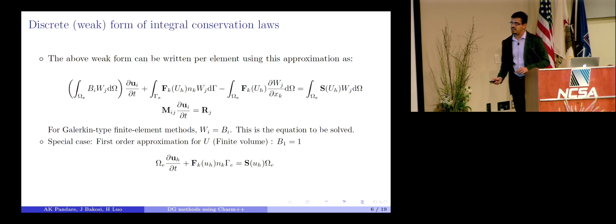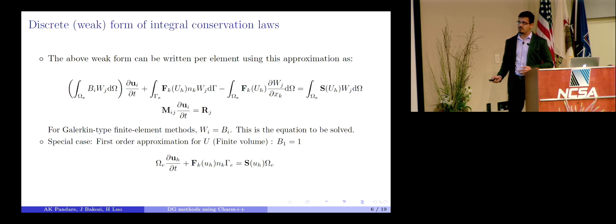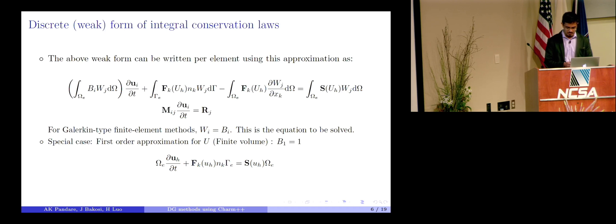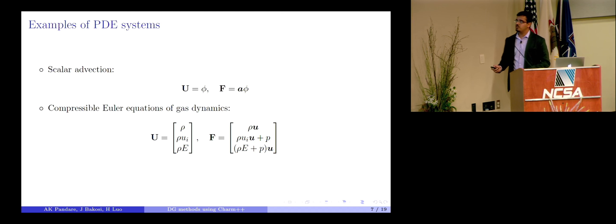So for Galerkin type of finite element methods, the test function that I was talking about is equal to the basis function. And that's the speciality of the Galerkin type finite element methods, which we are trying to use here. And the special case is obviously the first order approximation, which is the standard conventional finite volume method, where actually this guy just drops out because this is one. So what we have to solve is basically just this equation, which most of the CFD people will be familiar with. So right now we are at a stage where we have implemented the finite volume version into the quinoa code.